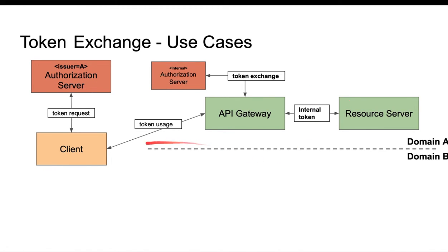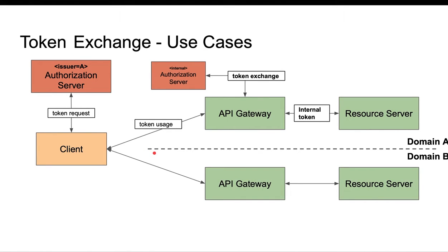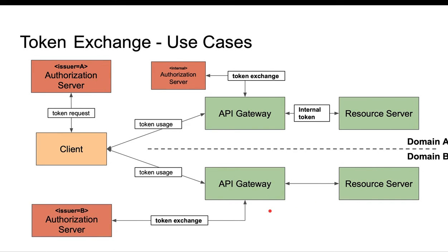Another use case would be where the client uses a token against a different domain — for example, domain B. The gateway in domain B receives the access token and realizes it was issued by issuer A. Because this system doesn't understand tokens issued by domain A, the gateway has to exchange it for a token issued by issuer B, the authority that issues tokens for the domain B area. So this gateway takes the token, sends it to the authorization server, and the authorization server issues a token back to the gateway which is now made for domain B.